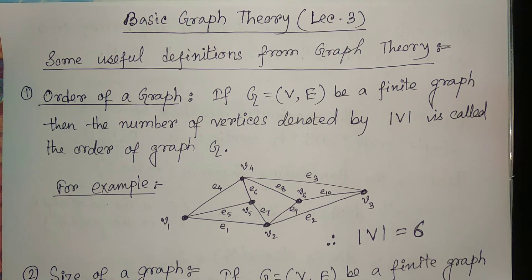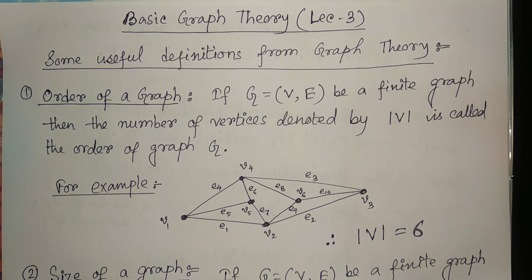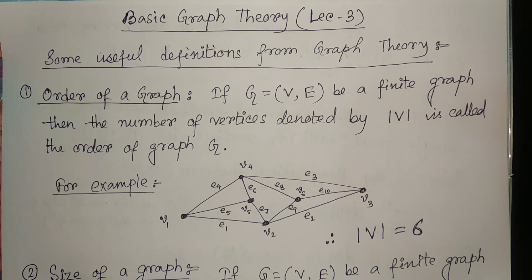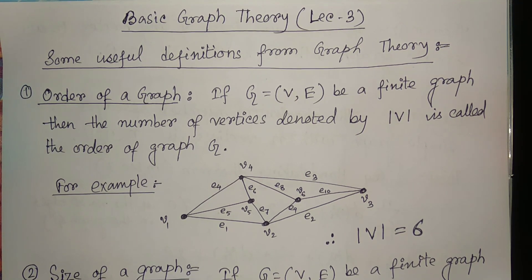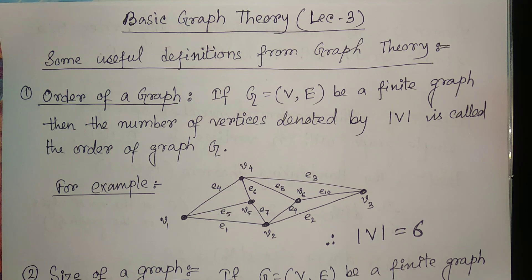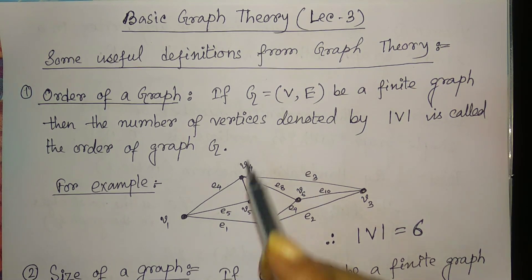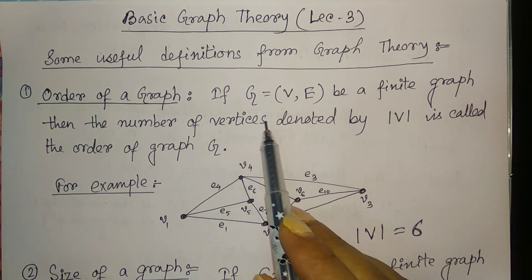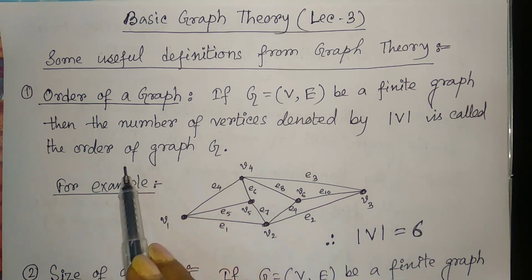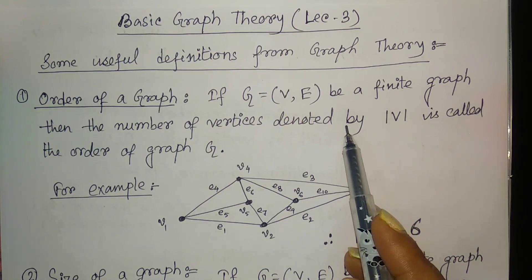Hello friends, welcome to this lecture. Today we come to know about some useful definitions from graph theory. The first definition is the order of a graph. If g be a finite graph, then the number of vertices, denoted by mod v, is called the order of a graph.